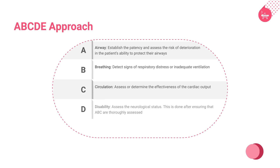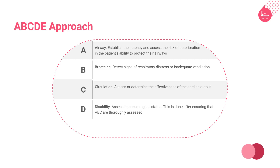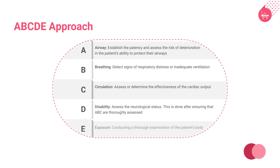D is for disability, used to assess the neurological status. This is done after ensuring that approaches A, B, and C are thoroughly assessed. E is for exposure, which includes conducting a thorough examination of the patient's body.